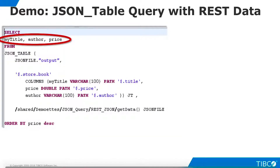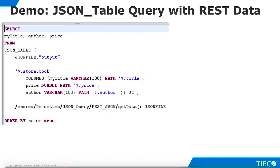Now we can create a view that uses the JSON table functionality to return a SQL result set. We must define the view in the SQL tab of the view editor. We want to return three columns: my title, author, and price. The JSON table expression is defined in the FROM clause of the SQL statement. It uses three ordered elements enclosed in parentheses: the content provider, the row provider, and a columns clause.